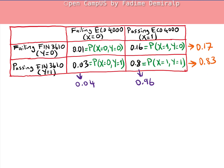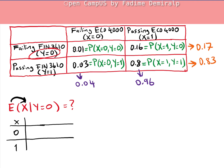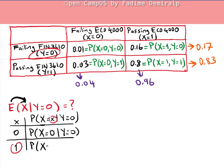Next, we find the conditional expected value of X given that the student fails Finance 3610, i.e., given Y = 0. To calculate E(X | Y=0), we need the conditional probability distribution of X for each outcome—when X = 0 and when X = 1—and then sum those products.